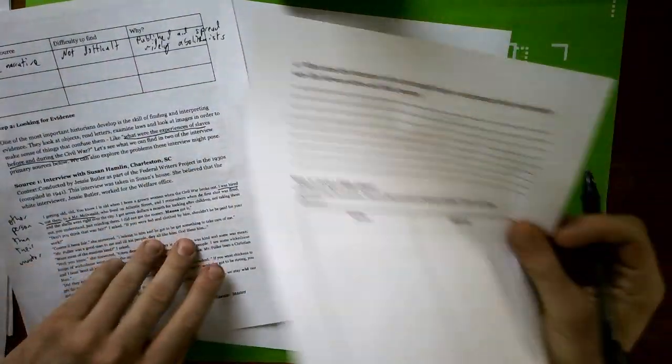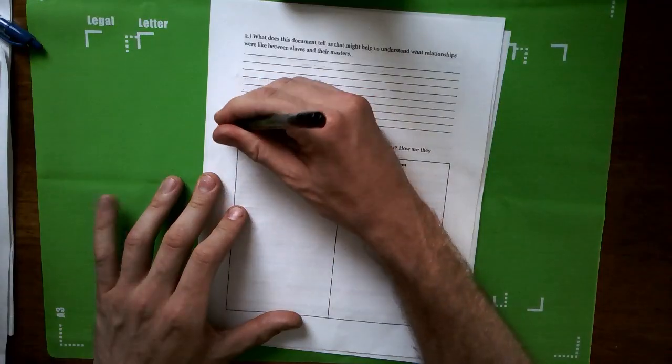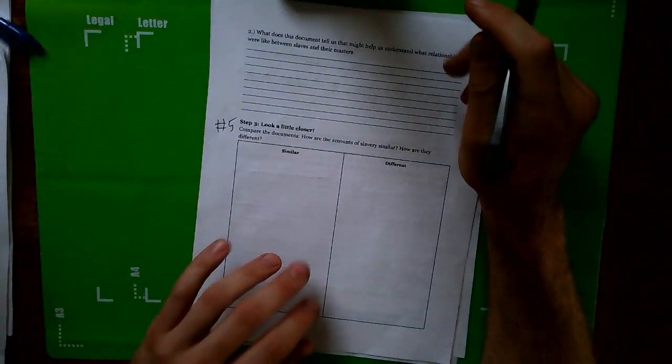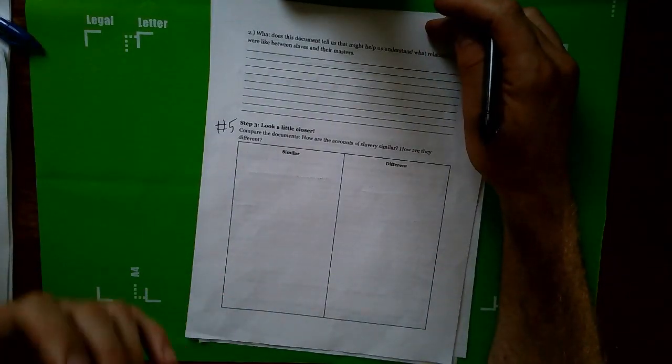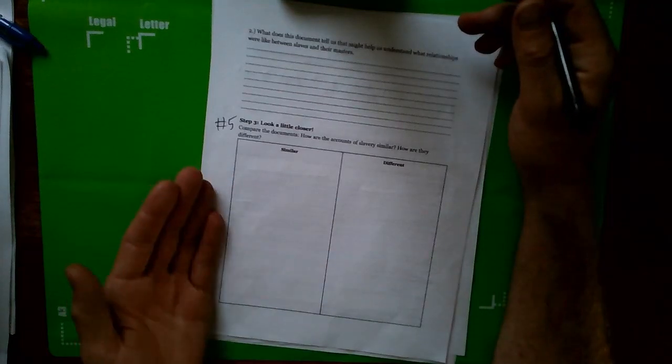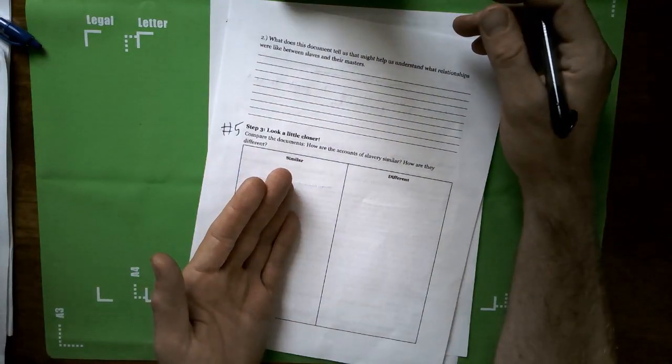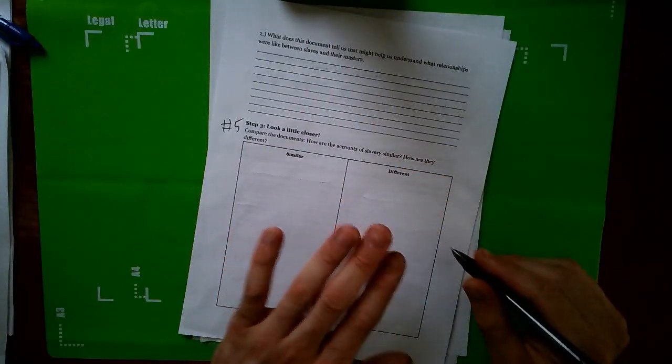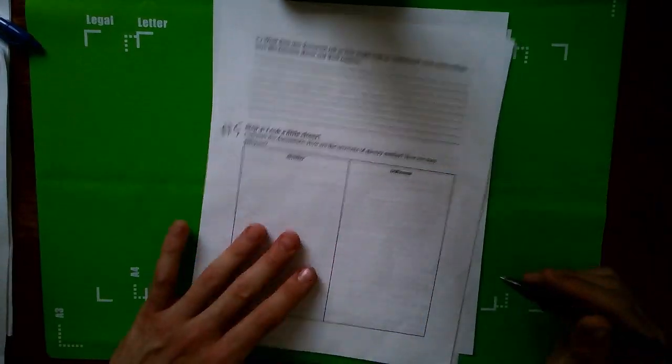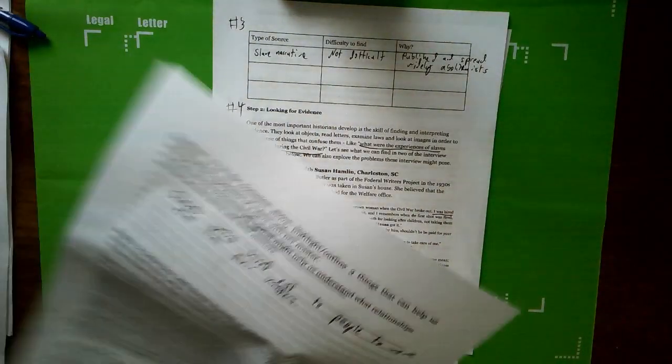Once number four is done, we're going to move on to this one, which is going to be number five in your Google Classroom. And so you're going to take the information you did in assignment number four, and you're basically going to just say, how do these two different sources differ? And so what's similar? Give me at least three reasons that it's noted in your classroom assignment, and what's different? Give me three reasons, and you're going to find plenty of those.